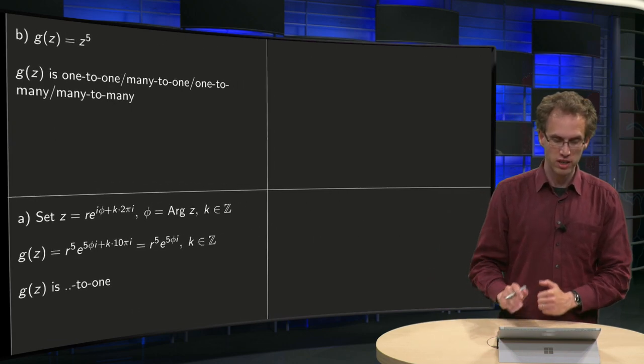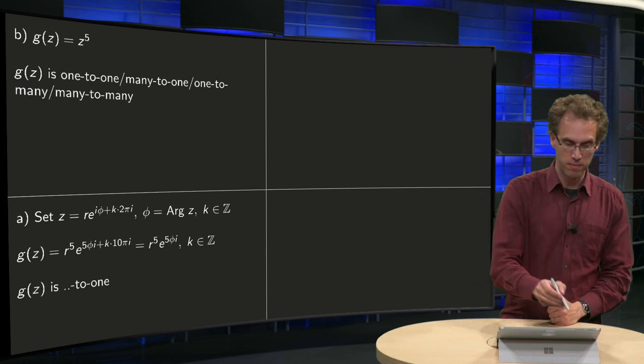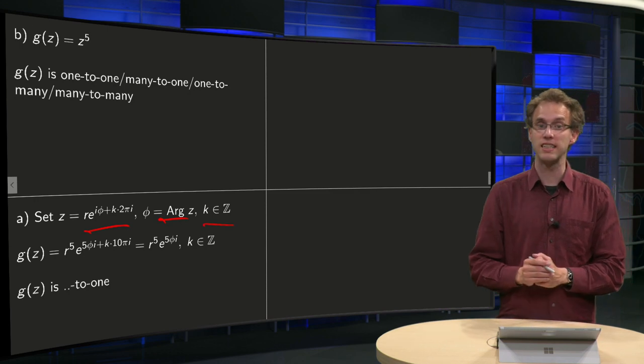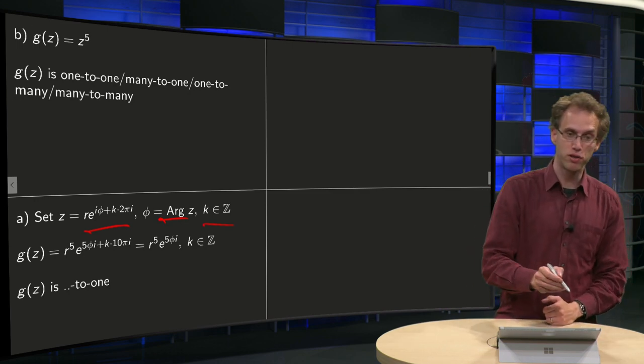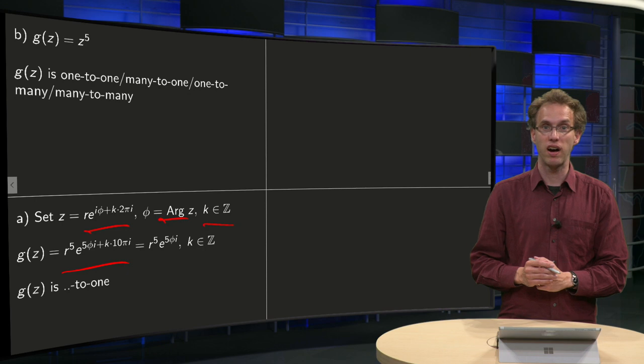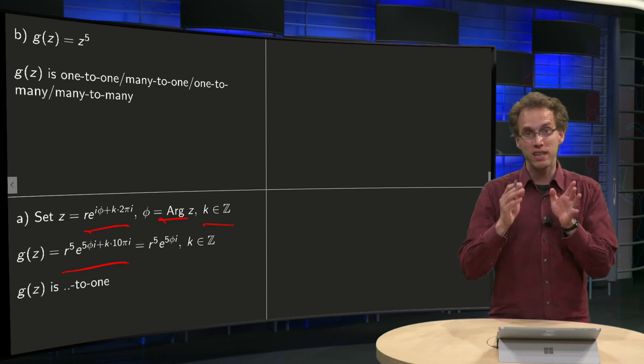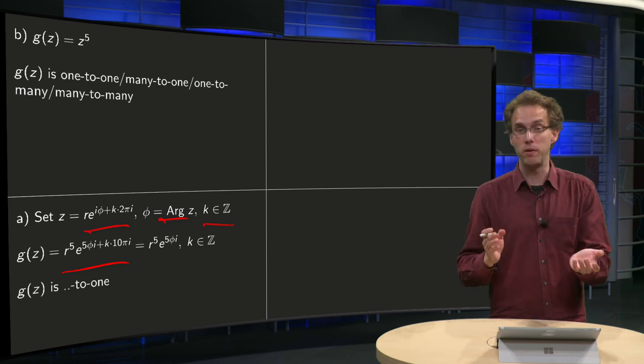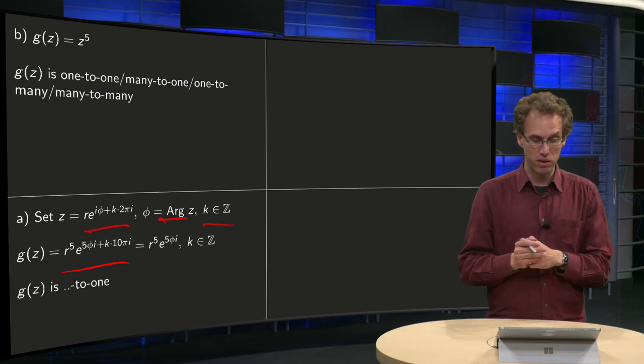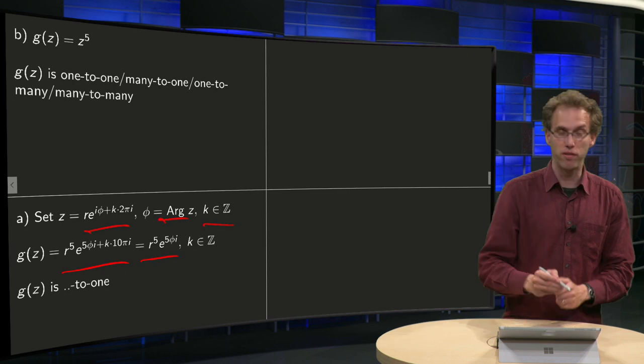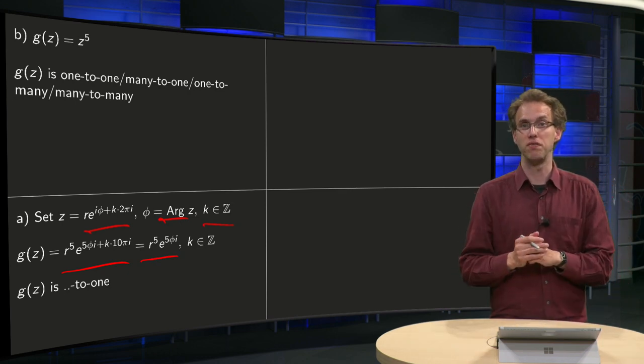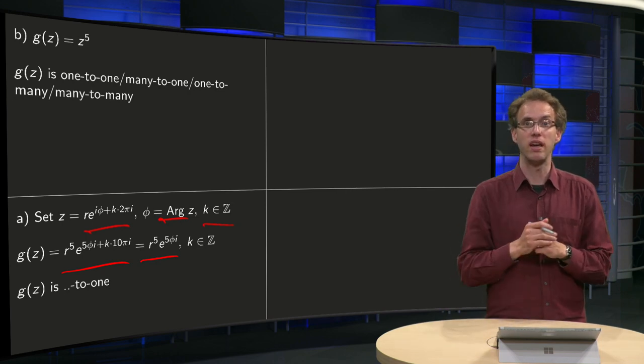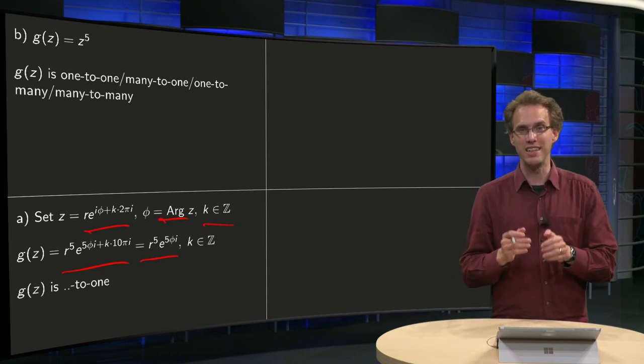Let's apply the same strategy. We set again z in polar form, find the principal value of the argument, k in Z, we compute the function value r to the power of 5. And then we see now we have k times 10pi, but e to the power k times 10pi is always 1, no matter what value of k you take. So you just get r to the power of 5, e to the power of 5 times phi, independent of k. So whatever k you take, you always get one image, so this value is nicely to one.